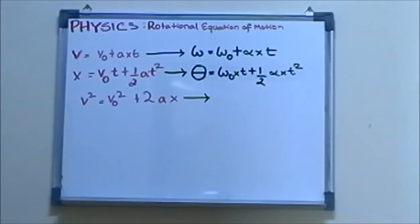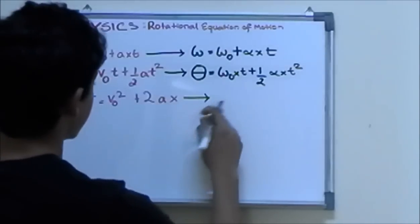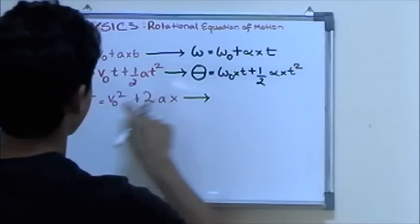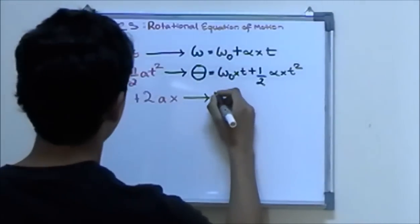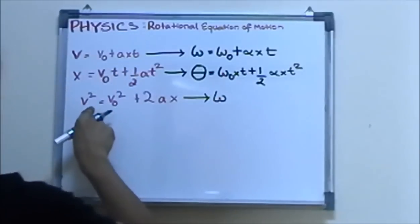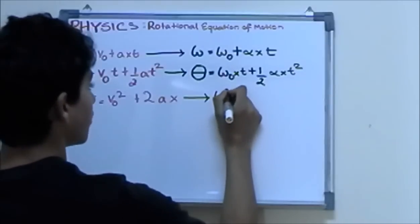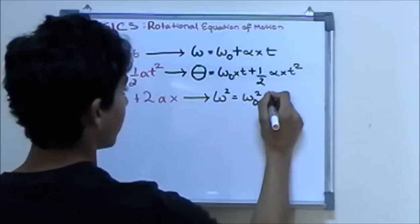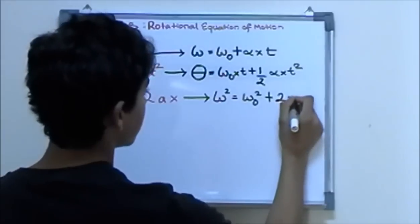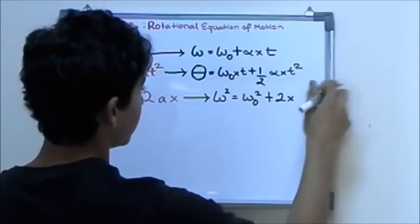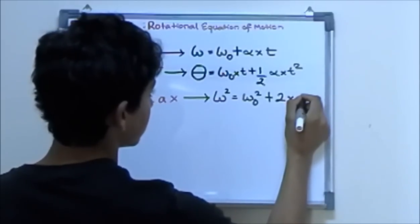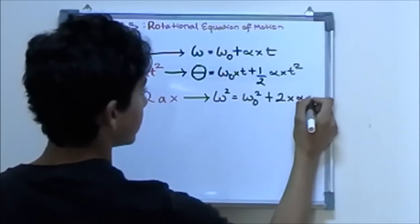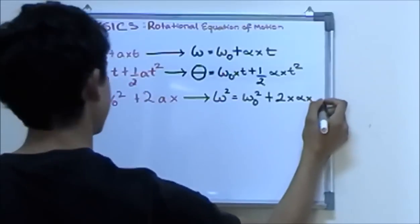Moving on to the third and last equation: velocity squared equals initial velocity squared plus 2 times acceleration times distance. In rotational form, velocity becomes omega, so we square omega. It becomes: omega squared equals initial omega squared plus 2 times alpha times theta.